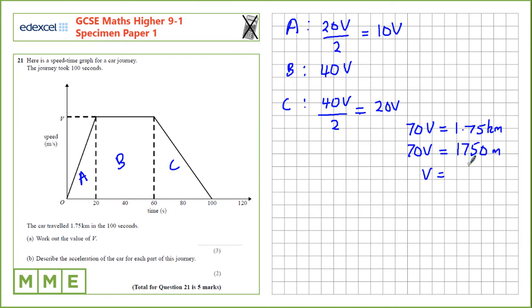Finally, V is 1,750 divided by 70, which equals 25 metres per second.